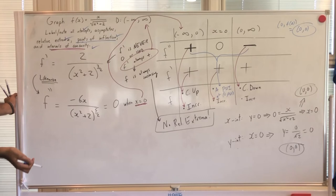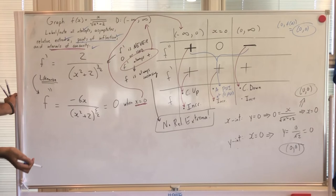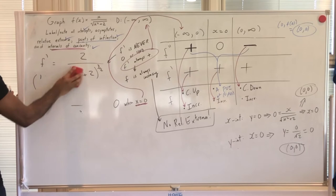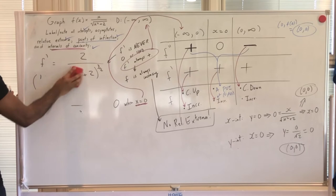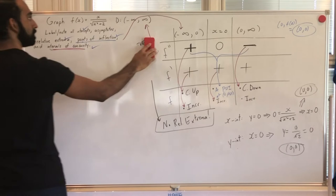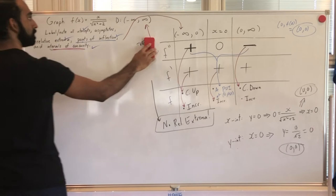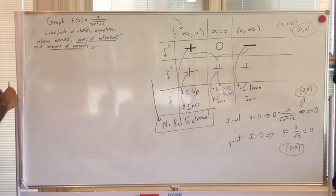Finally, asymptotes. Vertical asymptotes: the denominator √(x² + 2) can never be zero, so there are no vertical asymptotes. We do need to worry about horizontal asymptotes.